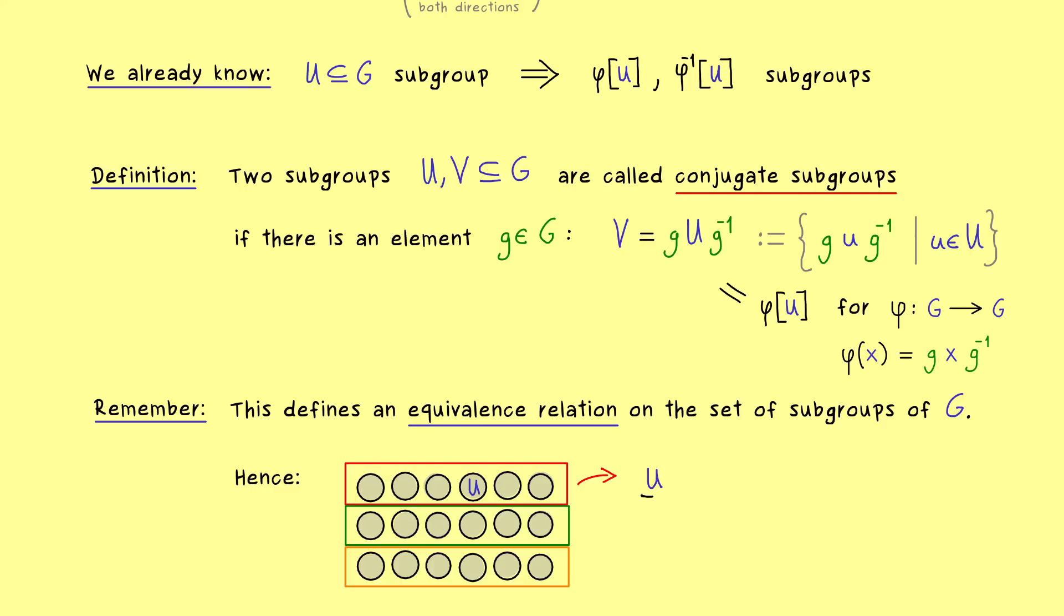And you know usually we use brackets to denote an equivalence class for a given element. And now in this case of conjugate subgroups such an equivalence class is really easy to describe. Namely each conjugate subgroup can be described by such an element G so we just go through all elements in the group.